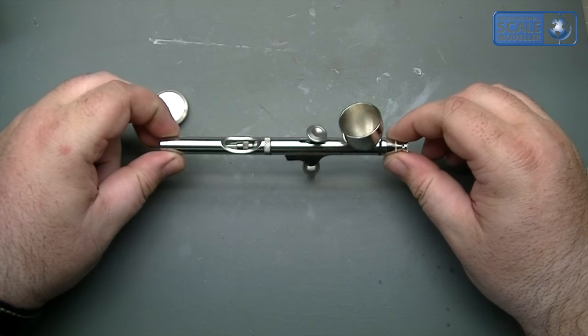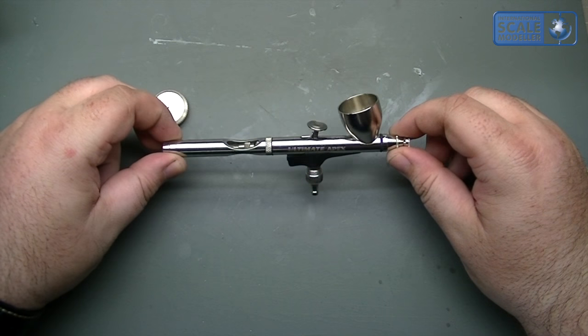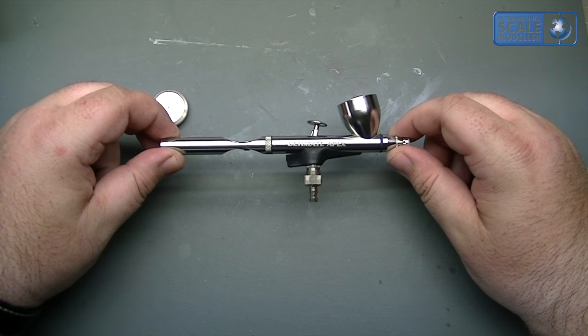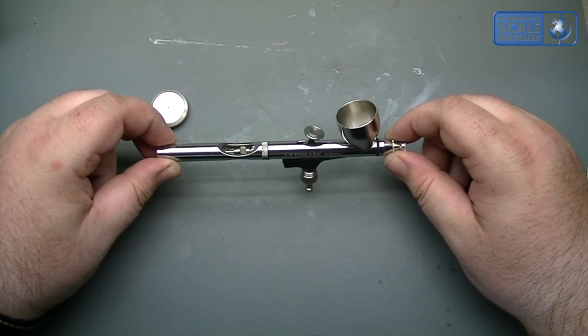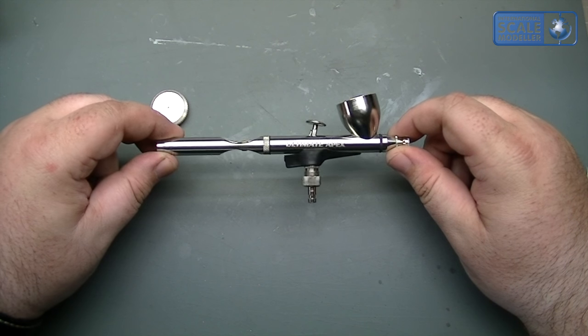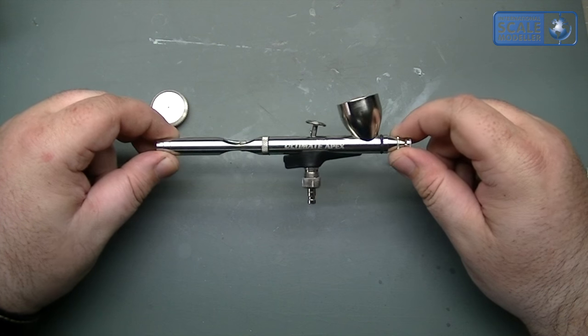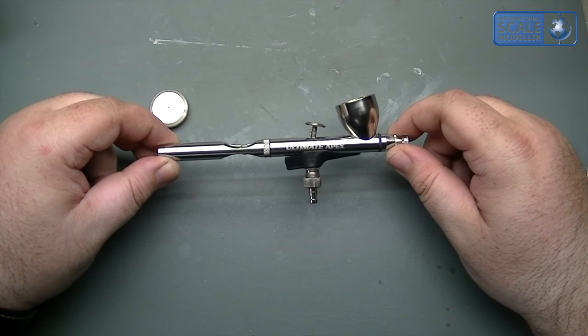So you can take these processes to any airbrush really. They're all very similar. Some are different ways of stripping down. Some are easier than others. This is by far one of the easiest airbrushes to strip. Doesn't even need a tool really at all. So you can pass those on to your little airbrushes. But ultimately, this is for the apex.